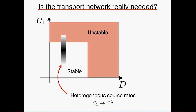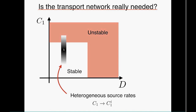To demonstrate the role of the glial network, we consider a heterogeneous distribution of source rates, where some glial cells have parameter values that would individually make the system unstable and others would be stable. With the glial diffusion network active, glial cells can share excess resources, and the whole network stabilizes at the critical point. When we turn off diffusion between glial cells, some glial cells accumulate resource they cannot redistribute, and the entire network becomes unstable.